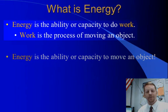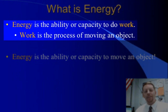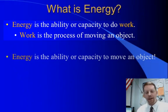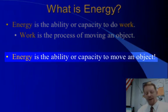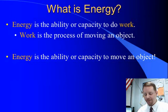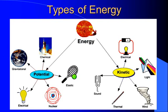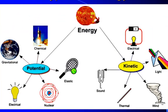So what is energy? Well, energy is the ability or capacity to do work. And we previously said work is the process of moving an object. So putting these two together, energy is the ability or capacity to move an object. Now, there are many types of energy, and we're going to divide them into two basic types: potential energy, which is energy of position or condition, and kinetic energy, which is energy of motion.